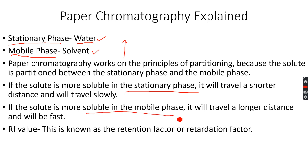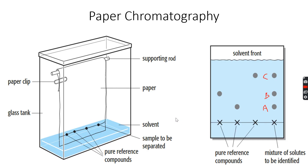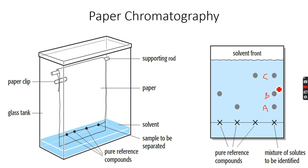On the other hand, if the solute is more soluble in the mobile phase and less soluble in the stationary phase, it will travel a longer distance because it tends to go with the mobile phase. As you can see, out of all three — A, B, and C — C is the most soluble in the mobile phase because it has traveled the largest distance on the chromatography paper.